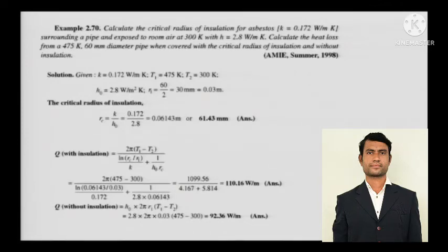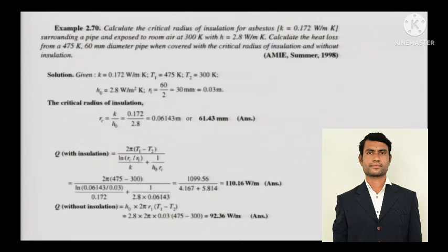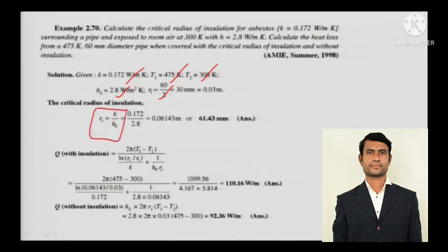Numerical: Calculate the critical radius of insulation for asbestos (k = 0.172 W/m·K) surrounding a pipe and exposed to room air at 300 K with h = 2.8 W/m²·K. Also calculate the heat loss from a 475 K, 60 mm diameter pipe when covered with the critical radius of insulation and without insulation. The critical radius for a cylinder is rc = k / h_o, which gives the answer directly.